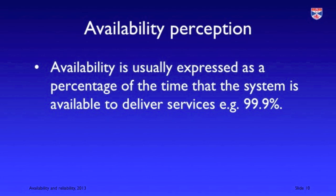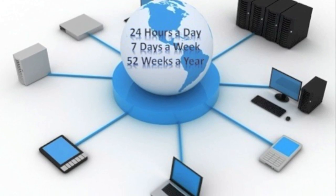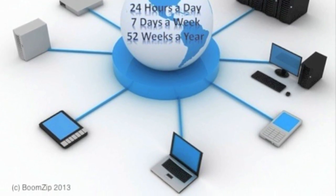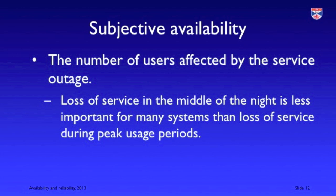We normally express availability as a percentage, and availability is particularly important in a world of web-based systems where people may access them at any time of the day or night or any day of the week. The problem with expressing availability as a percentage is that it can be misleading. A system with an availability of 0.999 — one failure in every thousand units — is much more damaging if that failure occurs during the day where there's a large number of system users than if it occurs at two o'clock in the morning where there are many fewer users.